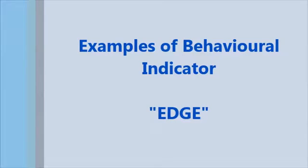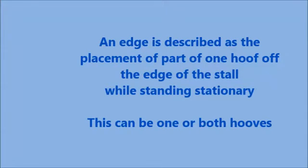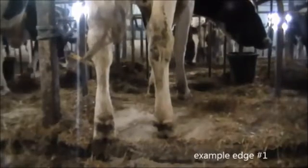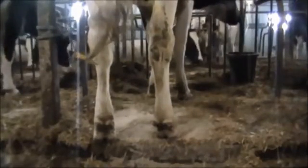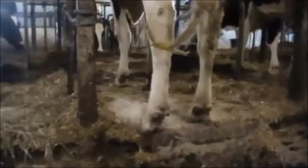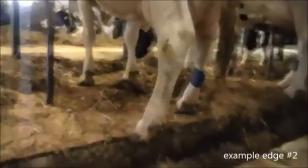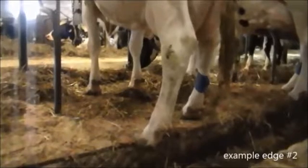Next, we will describe and provide examples of the behavioral indicator edge. An edge is described as the placement of part of one hoof off the edge of the stall while standing stationary. This can be one or both hooves. In this example, the cow has her left foot partially on the mat and her heel off of the mat — this is considered an edge. In this next example, this cow also has her left foot partially on the mat and her heel hanging off the edge, hence why we call it an edge behavior.